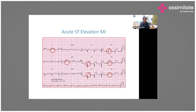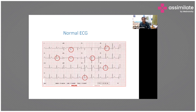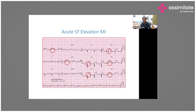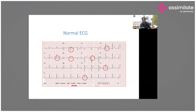Here you can see ECG examples showing acute ST elevation. Leads V3, V4, and V5 are shown, and there is also an extensive lateral ST elevation pattern. You can see the J-point elevation and ST elevation. In normal ECG, there is no ST elevation at the J-point.